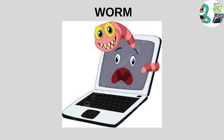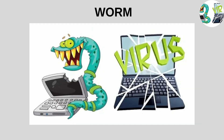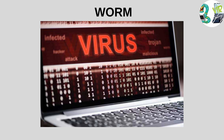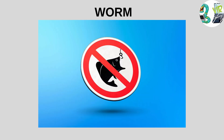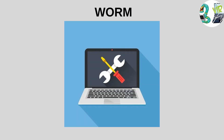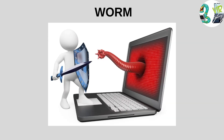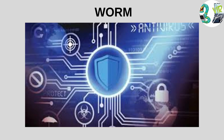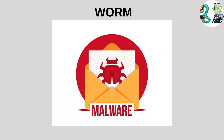A worm is a malicious piece of computer software that can self-replicate and spread rapidly over networks. Worms can infect other computers on a network automatically, often without the need for a file or program. They spread through email, messaging applications, or network vulnerabilities. Worms can consume computer resources, slowing down the system and causing networks to crash by generating excessive data traffic. In addition, some worms can open backdoors into your computer, paving the way for other malware.